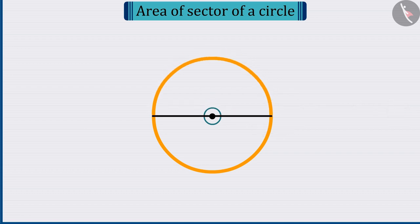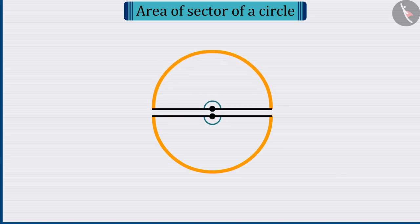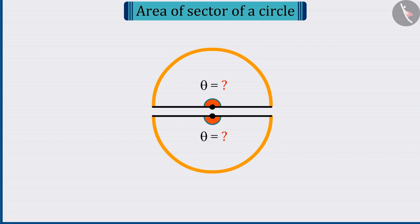You must remember that the center of the circle has a 360 degree angle. So can you now tell how many degrees will be at the center of a semicircle? Absolutely correct! Half of 360 degrees, that is, 180 degrees.